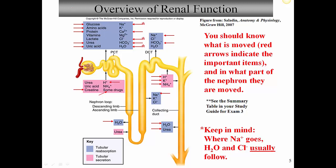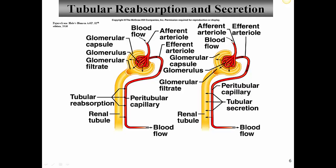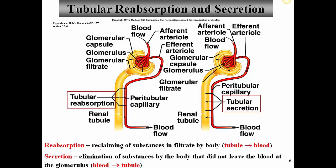Now that we've had an overview of nephron functions and where each process takes place, let's take a closer look at individual processes, starting with tubular reabsorption. Tubular reabsorption is the reclaiming of substances already in the filtrate back into the body — moving things from the tubule back into the blood. Secretion is the opposite process — the elimination of substances that didn't leave the blood at the glomerulus and didn't make it into the filtrate, but that we do want to get rid of.